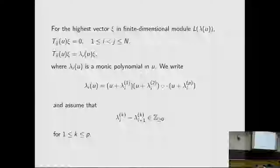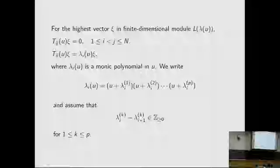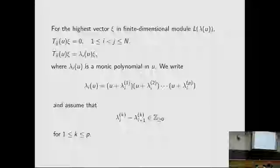For the highest weight vector in a finite-dimensional module L(lambda(u)), the action of capital T_{ij}(u) is 0 for i less than j, and the action of T_{ii}(u) on xi gives lambda_i(u) times xi. Here lambda_i is a monic polynomial in u, and we can assume that lambda_i minus lambda_{i+1} evaluated at k is a non-negative integer for any k.